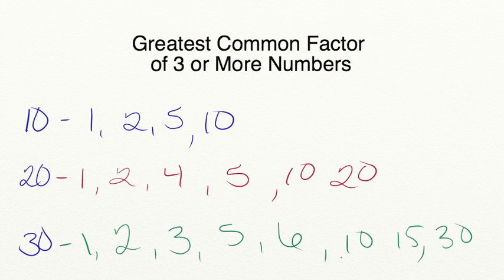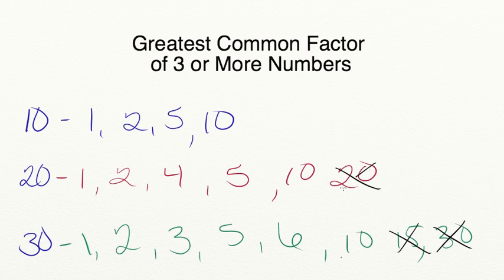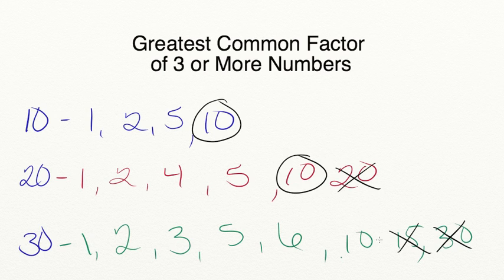Our next step is to find the greatest common factor — which factor is listed for each of these numbers and is the largest one? 20 and 10 don't have a common factor of 30, so we cross it out. They don't have a common factor of 15 or 20. But they each have a common factor of 10, so their greatest common factor is 10.